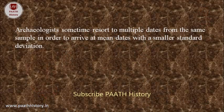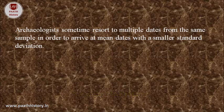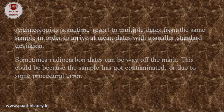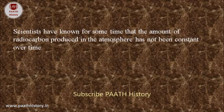Archaeologists sometimes resort to multiple dates from the same sample in order to arrive at mean dates with a smaller standard deviation. Sometimes radiocarbon dates can be way off the mark — this could be because the sample has got contaminated or due to some procedural error. Scientists have known for some time that the amount of radiocarbon produced in the atmosphere has not been constant over time.